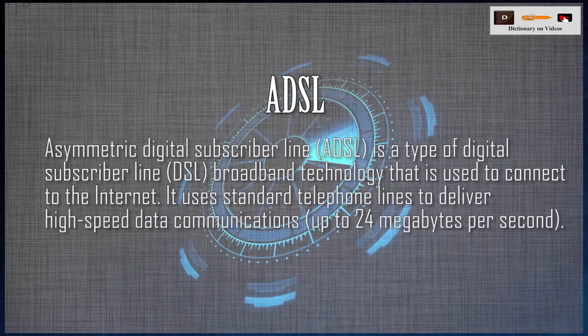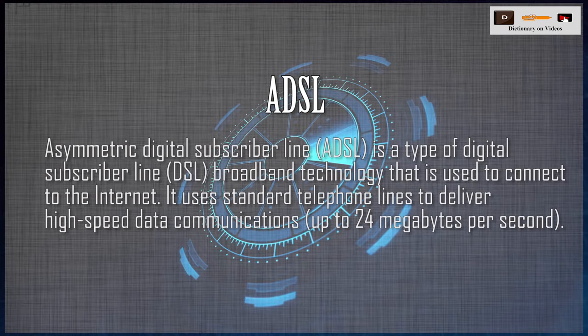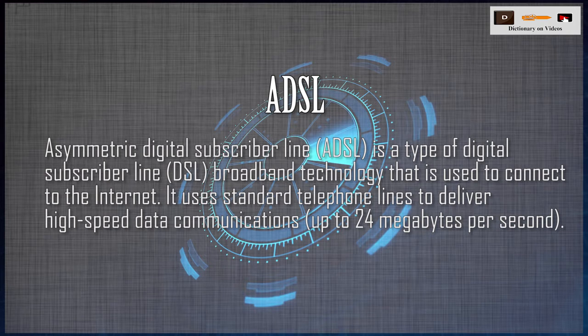ADSL. Asymmetric Digital Subscriber Line (ADSL) is a type of digital subscriber line (DSL) broadband technology that is used to connect to the internet. It uses standard telephone lines to deliver high-speed data communications, up to 24 megabytes per second.